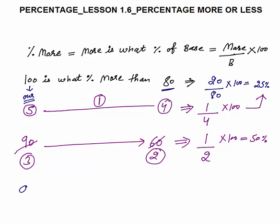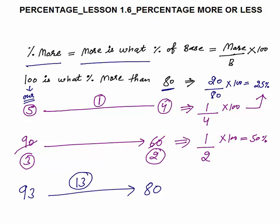Now if the numbers are difficult, you apply the basic conceptual way. For example, 93 is how much more than 80. In this case I can't take a ratio because 93 and 80 have no simple ratio. So we apply the basic method: 93 is 13 more than 80. Percentage more means more is what percentage of base, so I need to calculate 13 is what percentage of base 80.